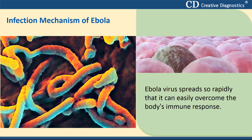In general, to survive, viruses must find a host cell and take it over. The virus also replicates itself so that it can be spread to other host cells. In response to a virus, the human body produces antibodies. Antibodies stop the virus from spreading and help clear it from the body. The problem with Ebola is that the virus spreads so rapidly that it can easily overcome the body's immune response.